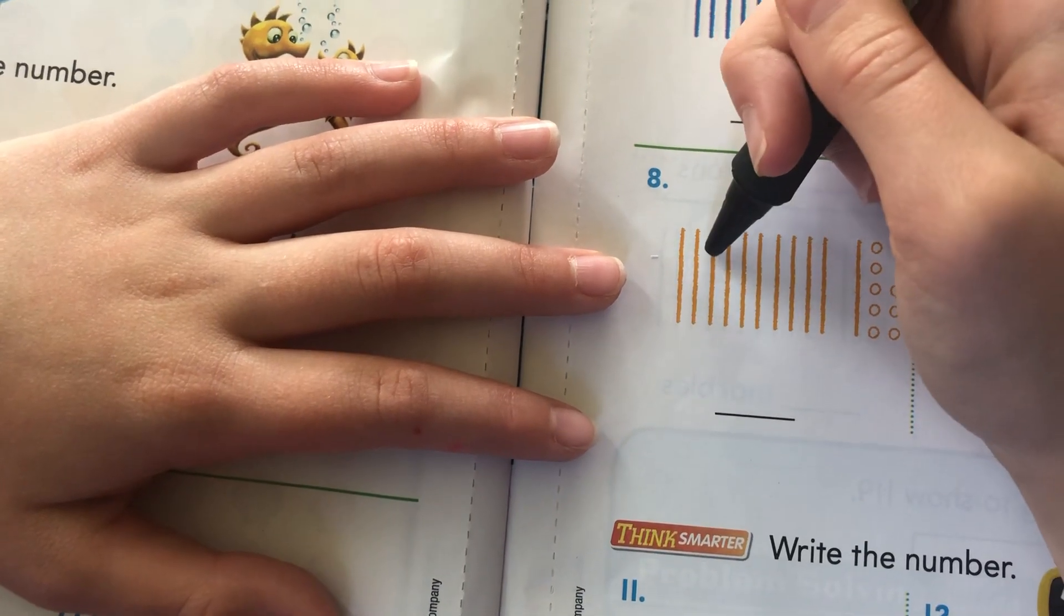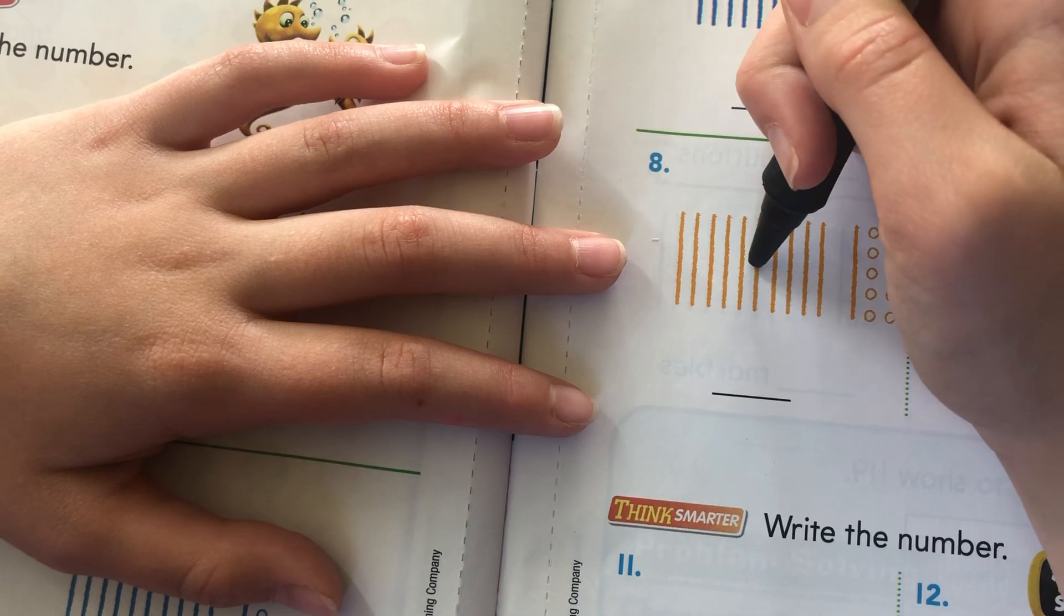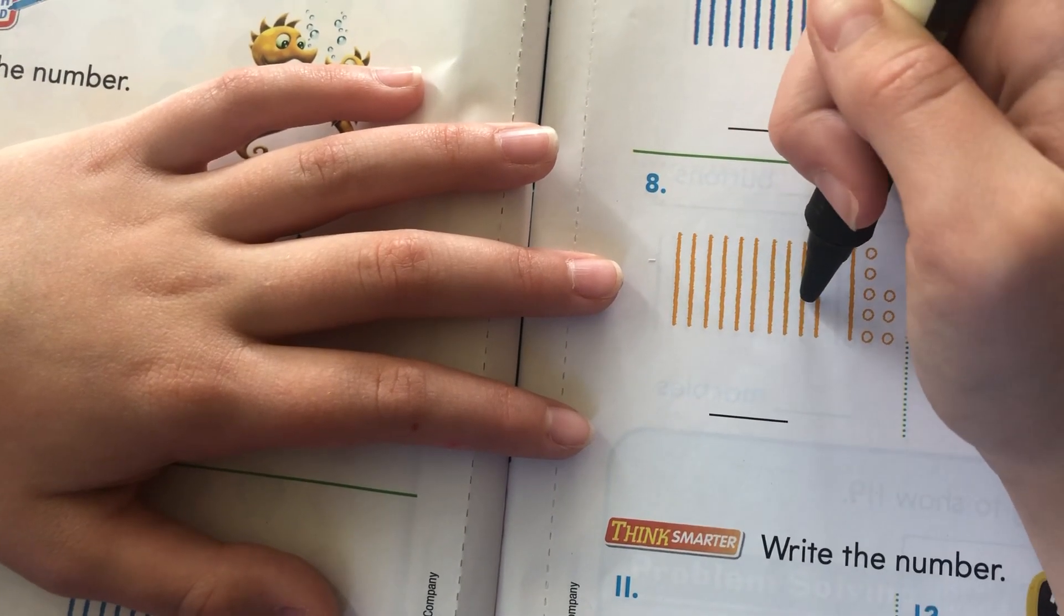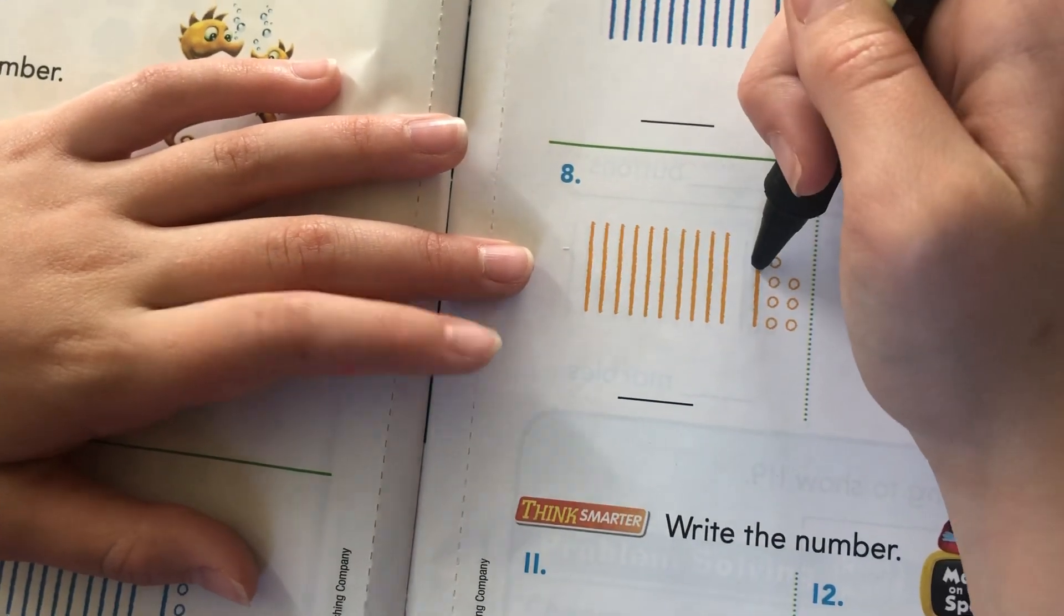10, 20, 30, 40, 50, 60, 70, 80, 90, 100. But we're not done. We still have one right here. So, this would be 110.